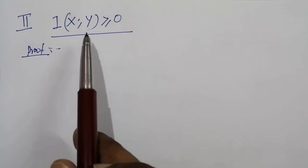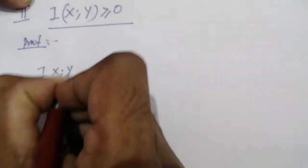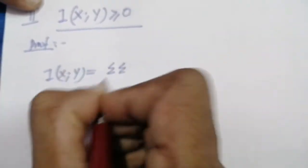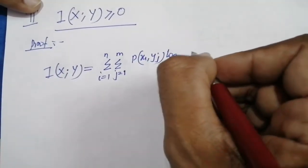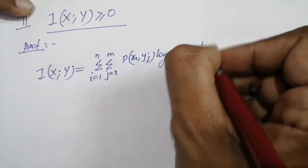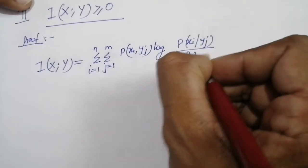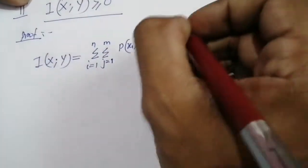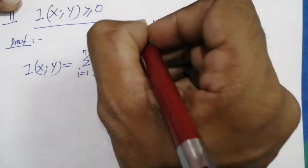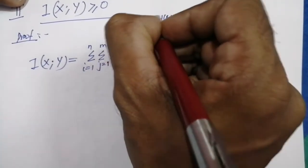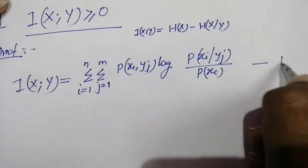The second property is that mutual information is non-negative. Again we start from the basic definition: I(x;y) equals the double summation over i from 1 to n and j from 1 to m of p(xi,yj) log(p(xi|yj)/p(xi)), obtained from the basic definition h(x) - h(x|y). This is equation number one.